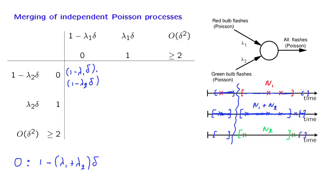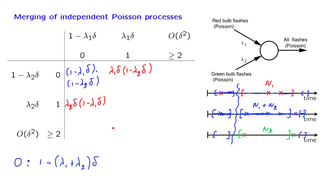What's the probability of getting one arrival? This can happen in two ways: one arrival in the red process and zero in the green, or one arrival in the green process and zero in the red. The probability of one arrival in the merged process is the sum of these two probabilities, and throwing away terms of order delta squared, what we're left with is (lambda 1 plus lambda 2) times delta.